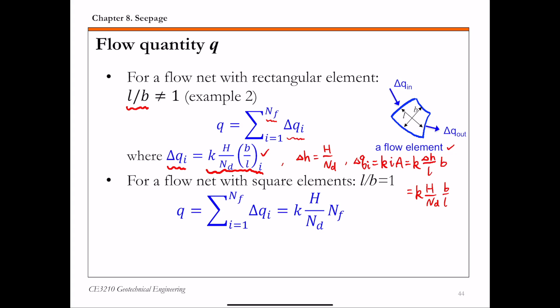The second scenario is a special case where all flow elements are square, meaning l over b equals one for all elements. In this case there is a simplified expression: q equals k times h over nd times nf. This simplified formula applies only when your entire flow net consists of square elements.